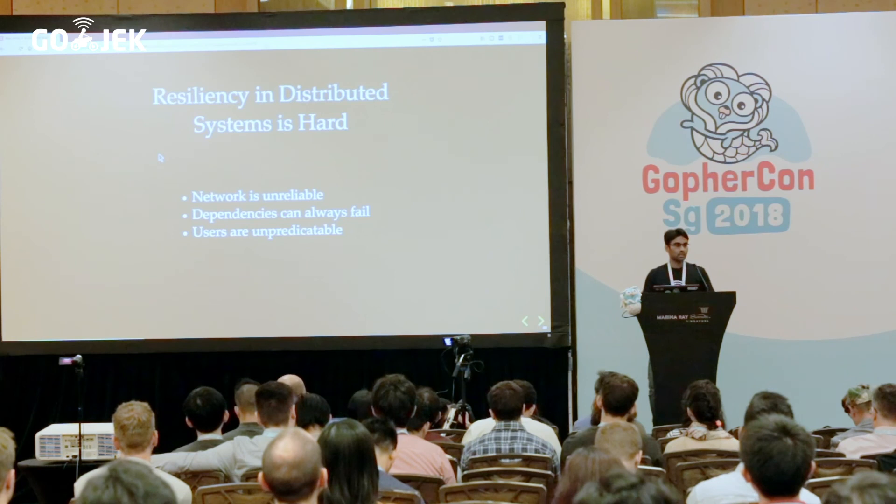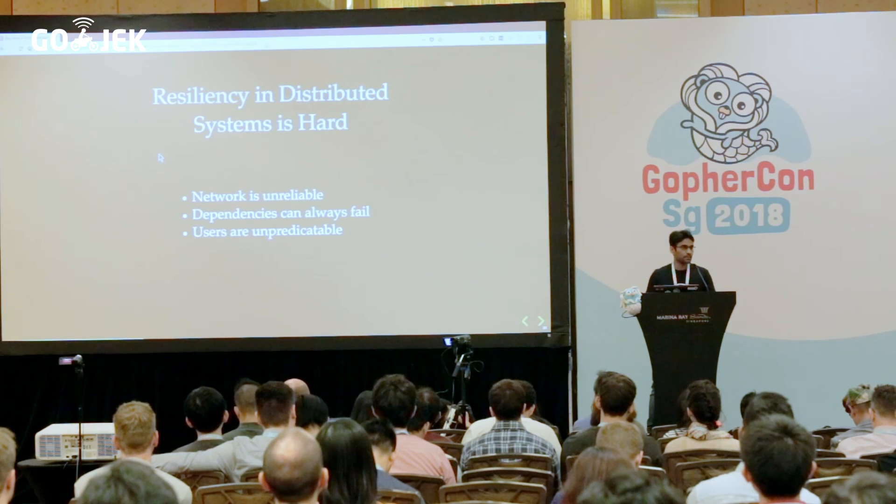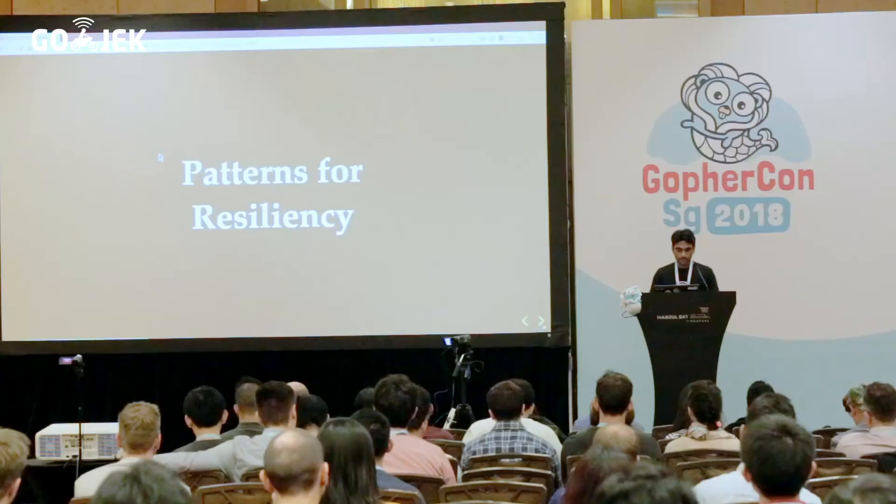Resiliency in distributed systems is hard — it's not easy to achieve. For one, the network is highly unreliable. There are network latencies which might increase, and there are network partitions which might occur. Dependencies will always fail — you have to design your system thinking that dependencies actually fail. Users are unpredictable too: when our systems slow down, people tend to retry more, which actually kills your system more — it's potentially your users DDoSing your own system. The whole point of distributed systems was to avoid a single point of failure, but now we have a whole different set of problems.